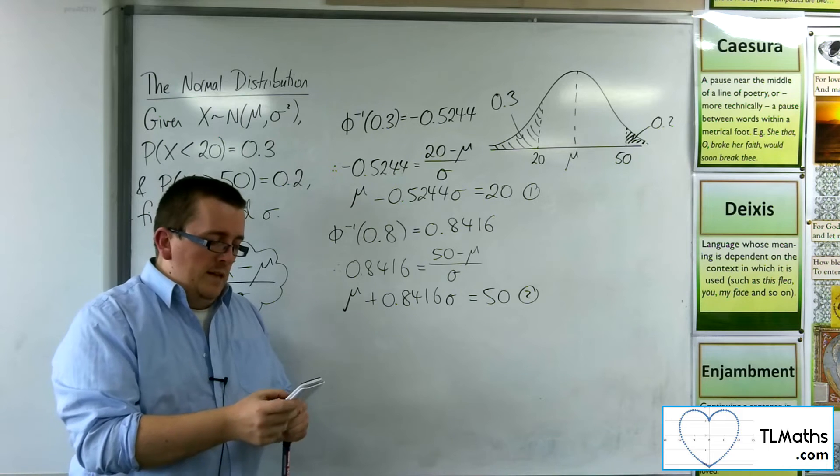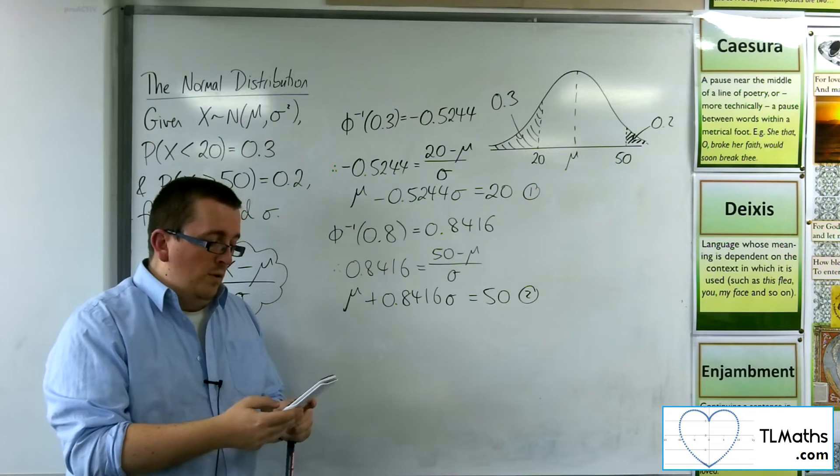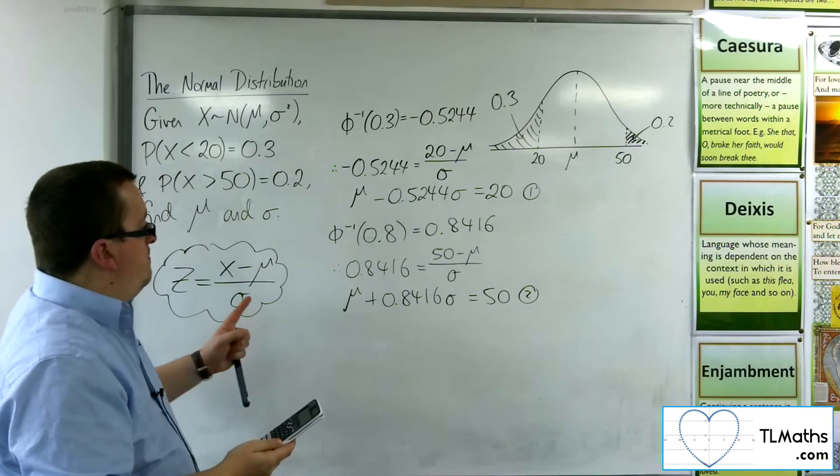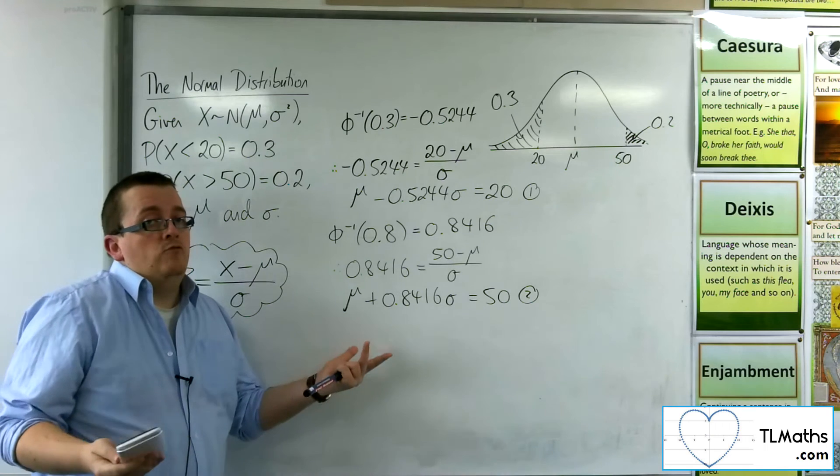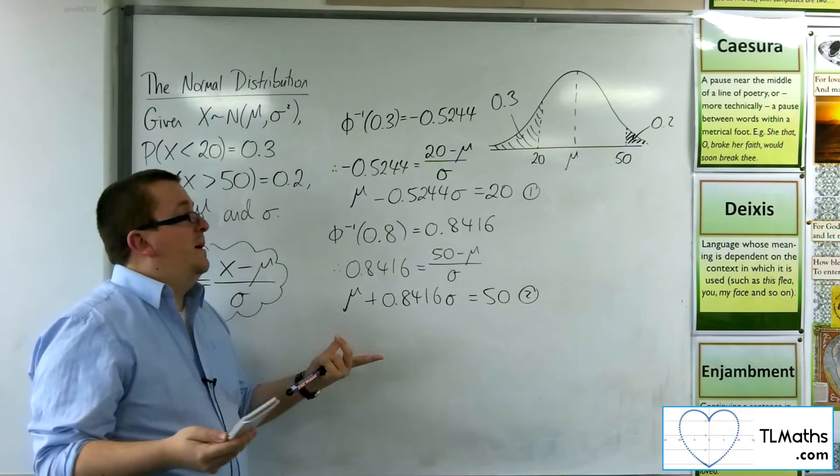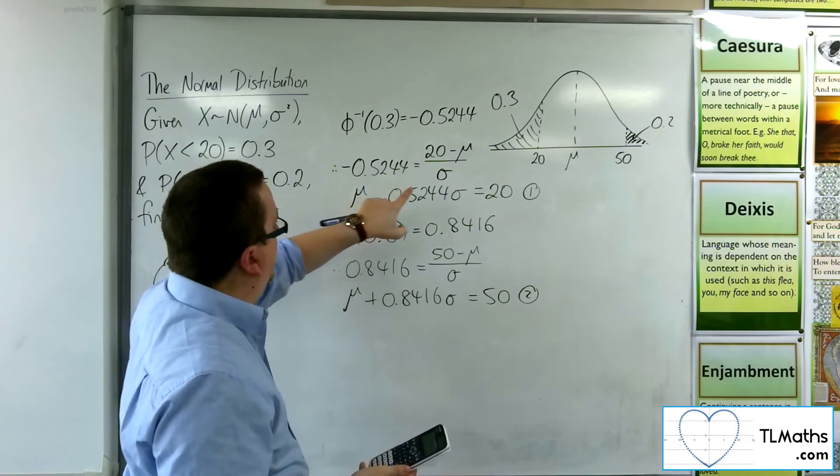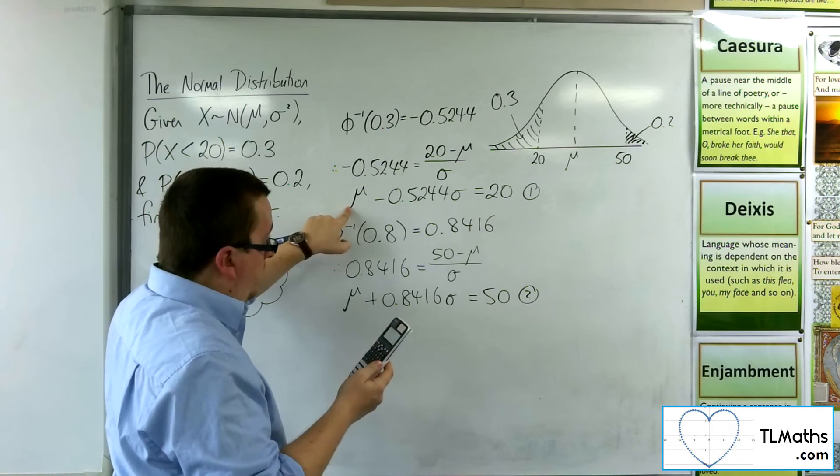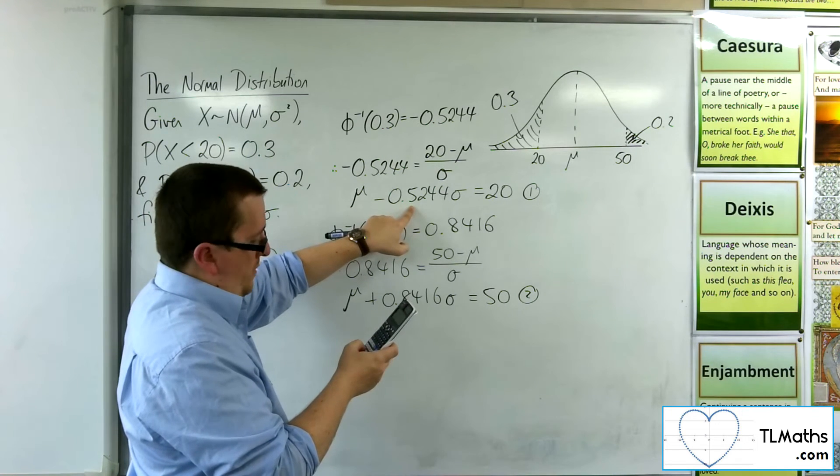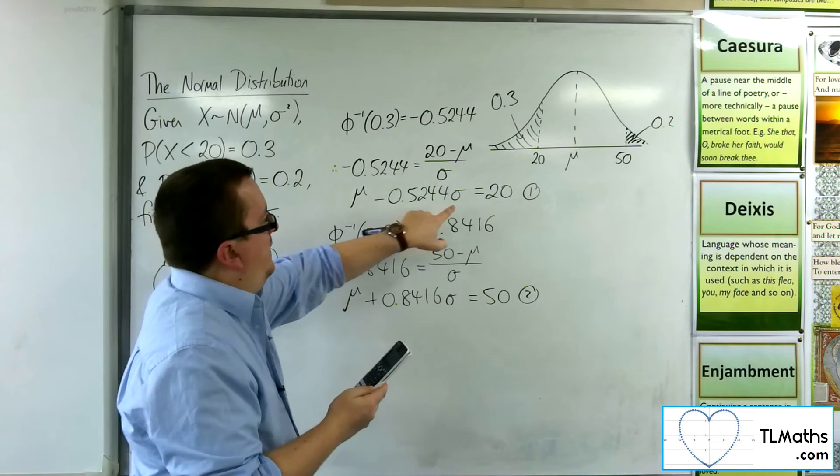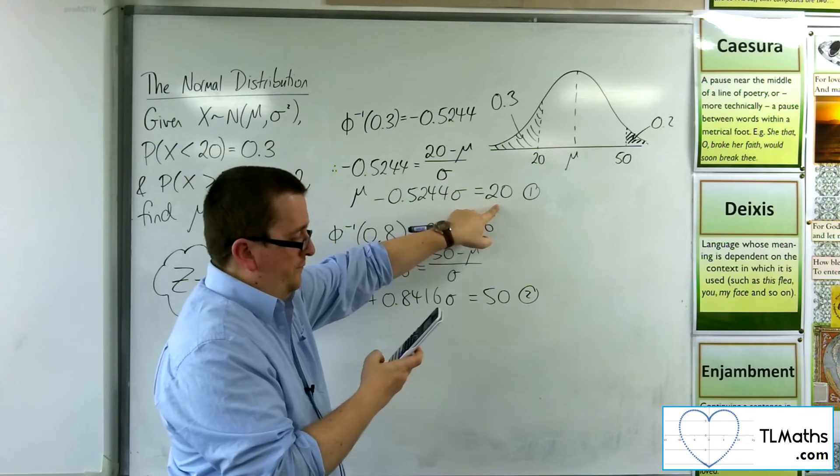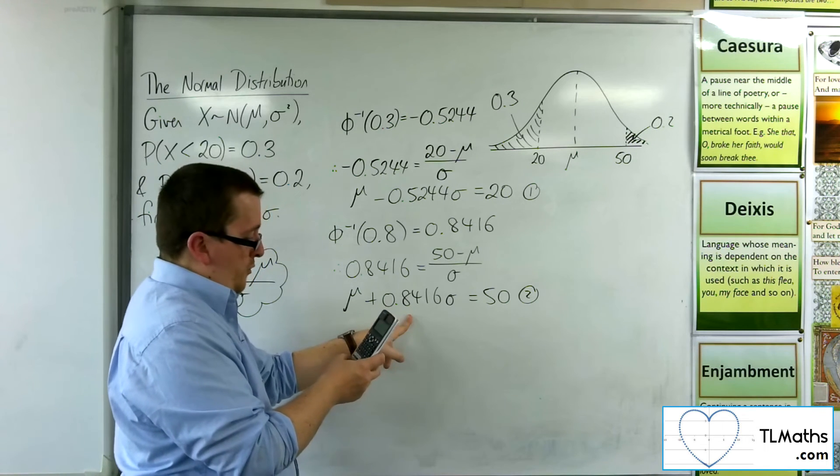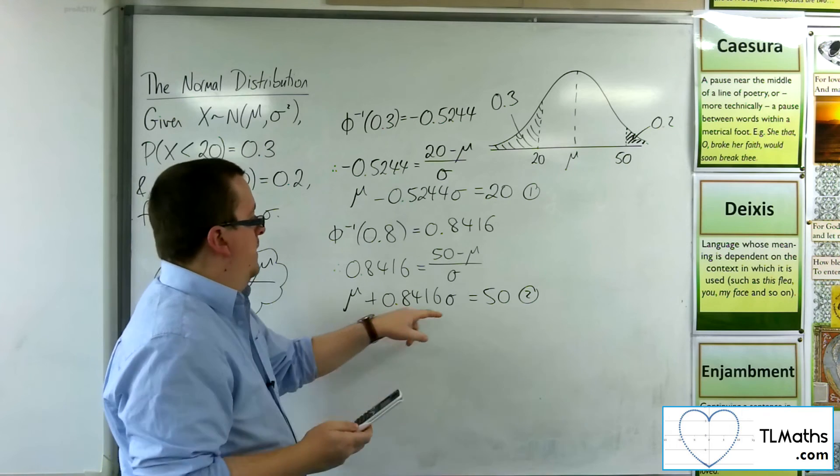So go to menu and then equation function. So A. We want simultaneous equations, so number 1. We want two unknowns because we've got the μ and the σ. Now it's going to read it off as x and y. So we need to make sure we get this around the right way. I'll take the μ as x and the σ as y. So I've got 1 lot of x take away, so minus 0.5244 y. And then I've got equals 20. Then I've got 1x plus 0.8416 y equals 50.